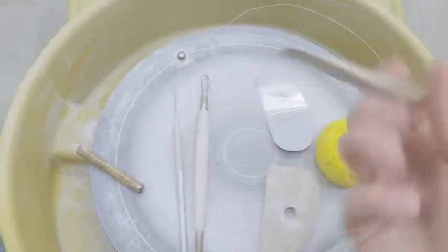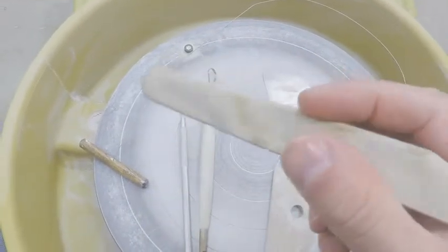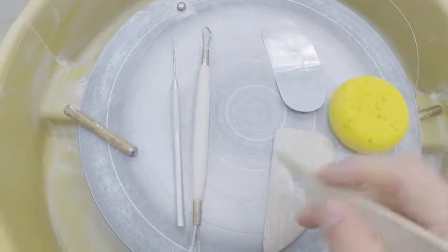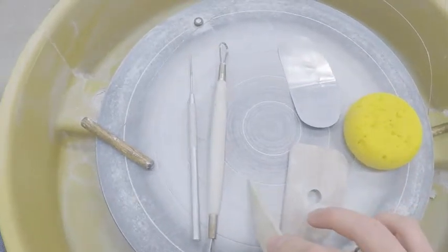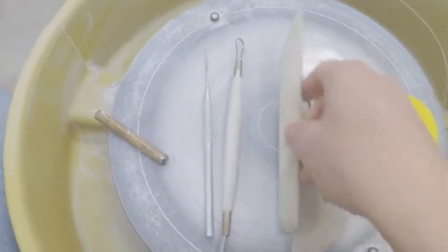Then you've got your modeling tool. Not quite as useful as it is in hand building, but it will help you trim the bottom of the piece off and really get that off and scrape the skirt off, which is important.